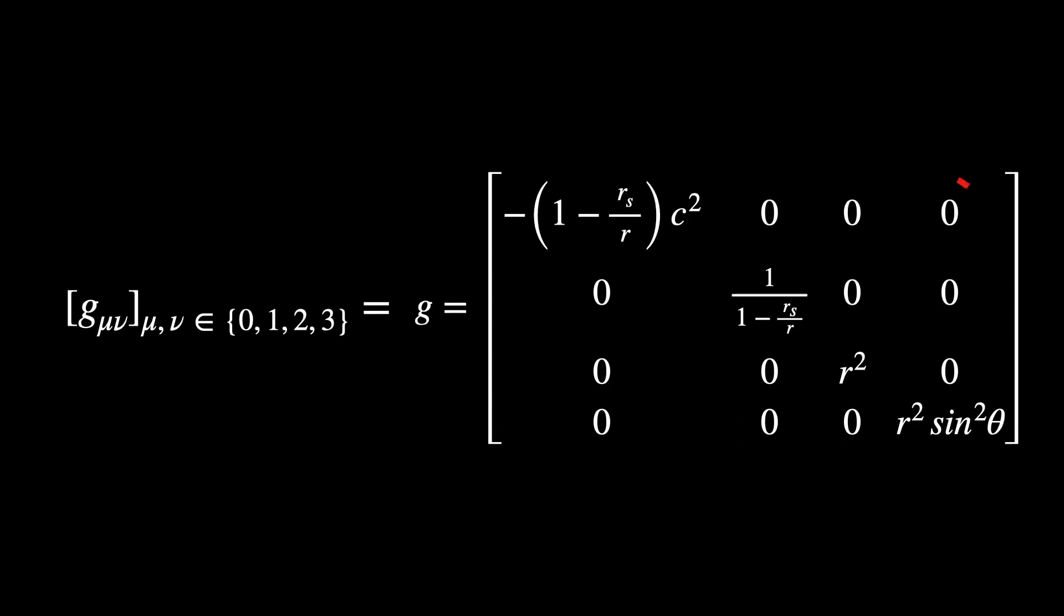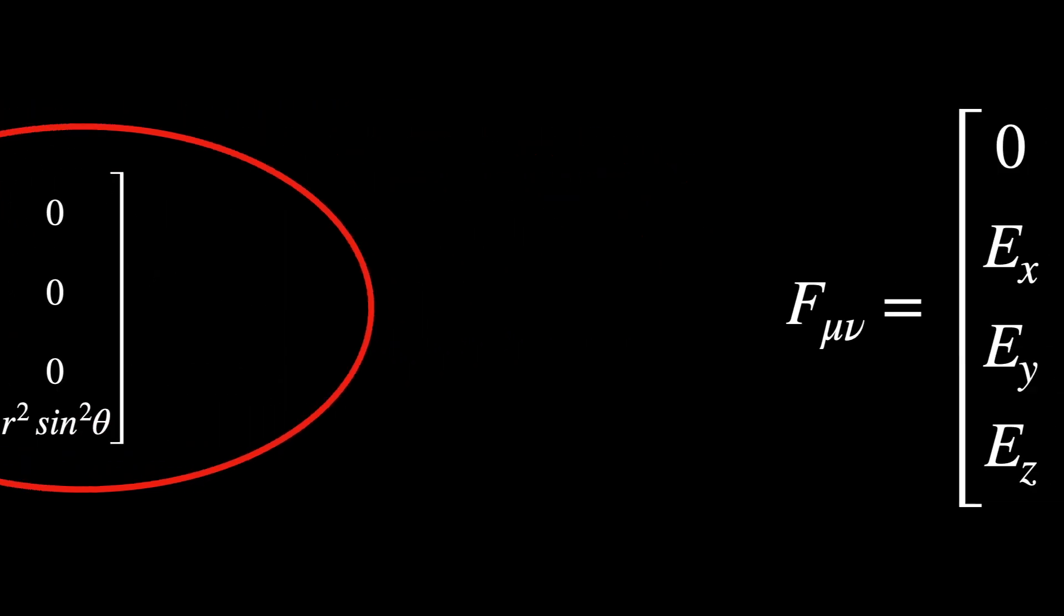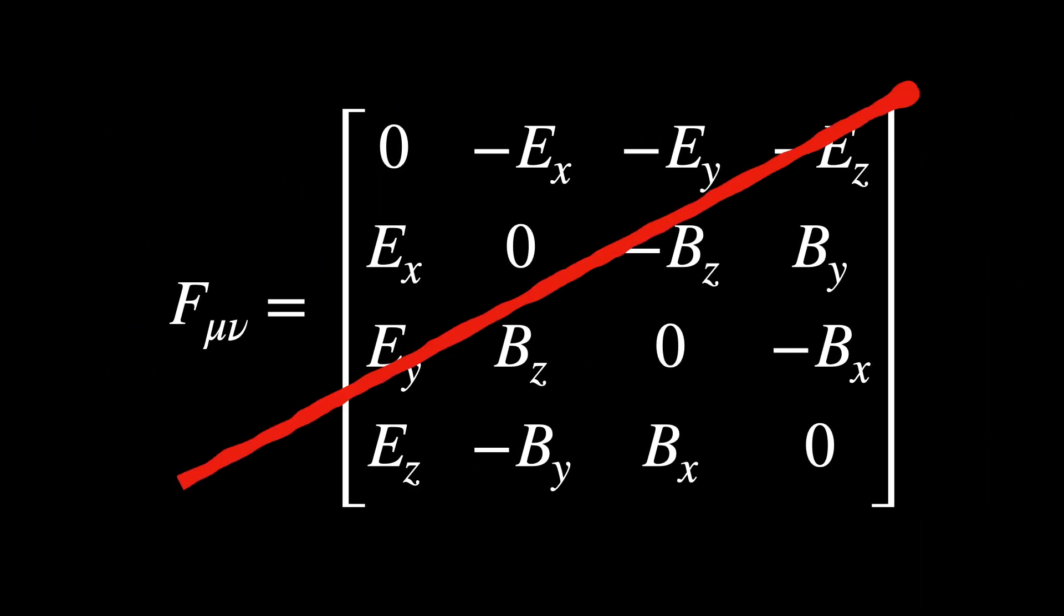And the last assumption is no electrical charge. As a consequence, the metric g_μν remains purely gravitational and there is no electromagnetic field tensor F_μν.